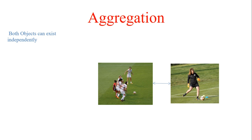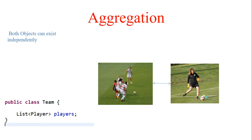Another example of aggregation is a football team and a football player. A football team has multiple players, and a player can play for multiple teams. One object can exist without the other: a football player can exist without a team, and a team can exist without one single player since they have a list of players. The player retains football-playing capabilities without the team object. They are loosely coupled with a 'has-a' relationship — this is a many-to-many relationship, which will be covered in a later video.